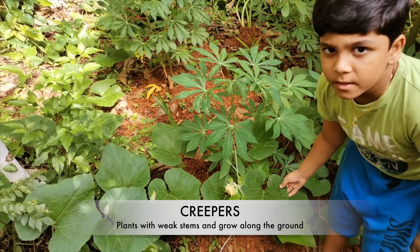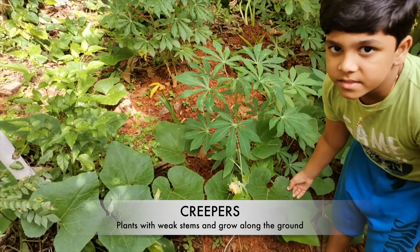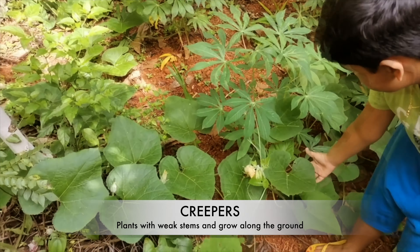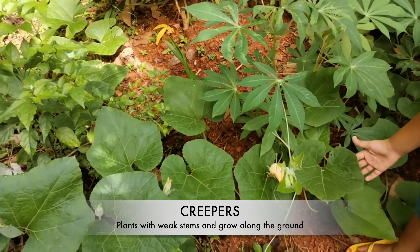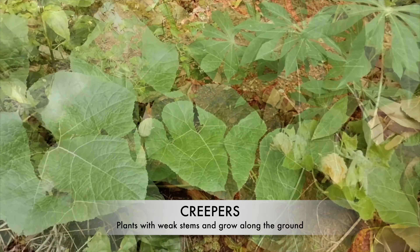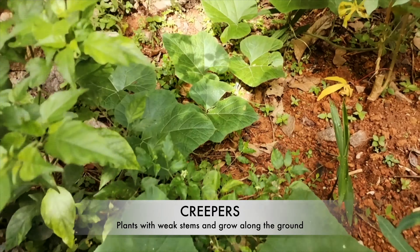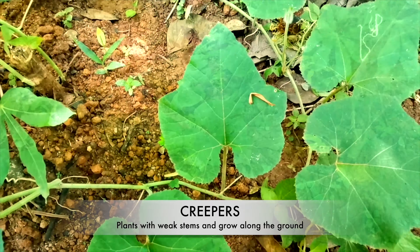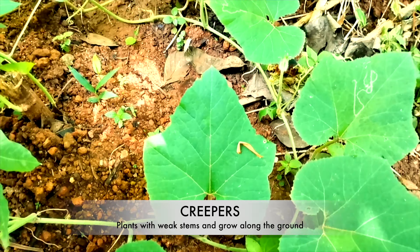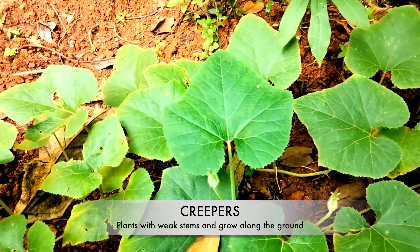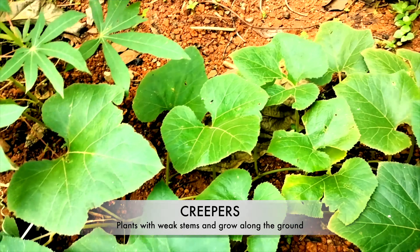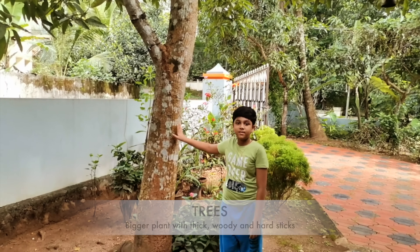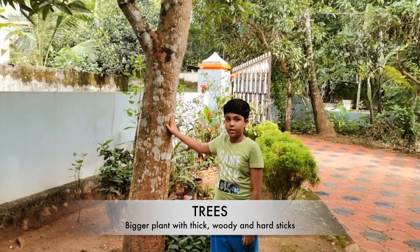This is a pumpkin plant, an example of creepers. Creepers also have weak stems like climbers, but they grow along the ground. Pumpkin, watermelon, and bottle gourd are a few examples of creepers.